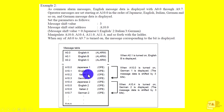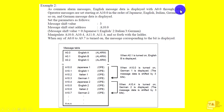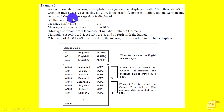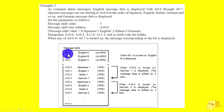English, Japanese — one, one, one — Japanese, English, Italian, German. This is how it works. A lot of messages — English messages are displayed with A0.0 through A9.7. Operator messages are set starting at A10.0 in order of Japanese, English, Italian, German. The message shift value and shift start result use A10.0 through A0.0 to A9.7.